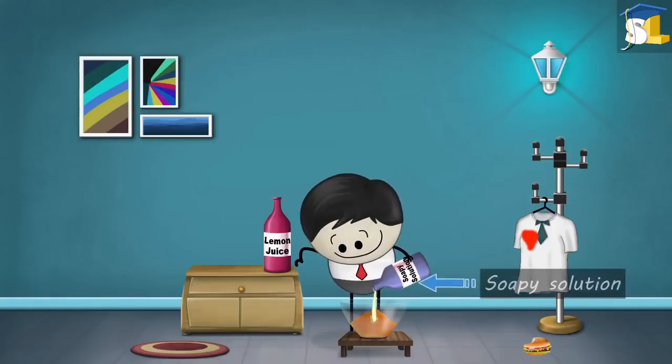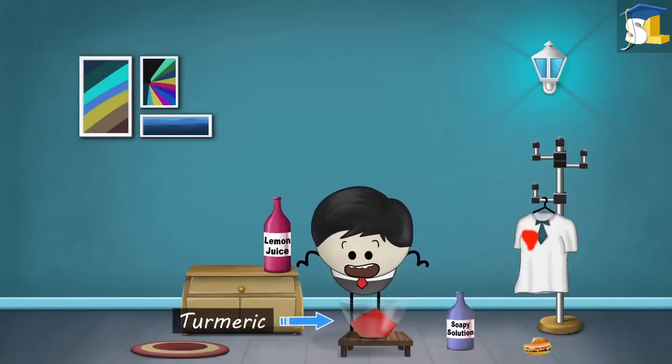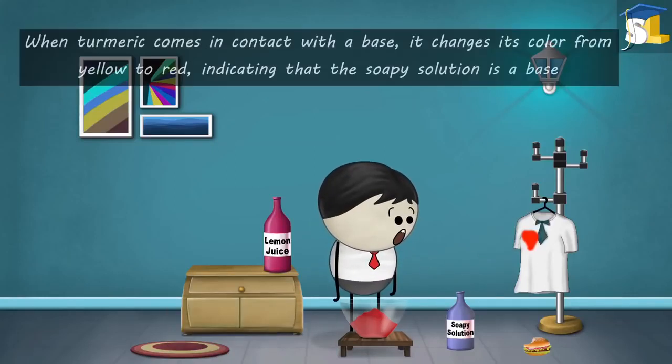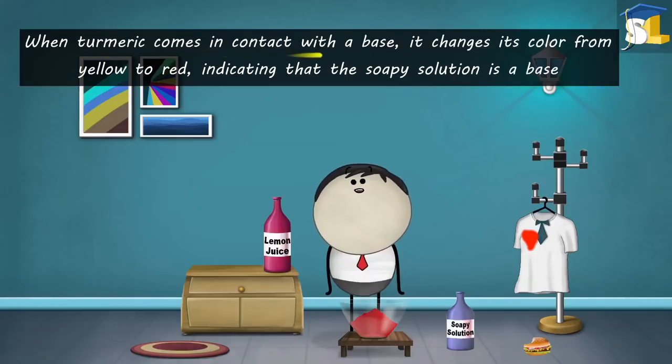However, when we pour the soapy solution on the turmeric powder, we see that the color of turmeric powder turns red. This is because soap is a base. When turmeric comes in contact with a base, it changes its color from yellow to red.